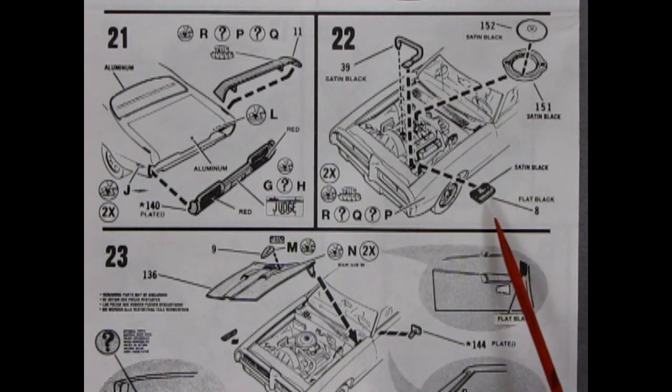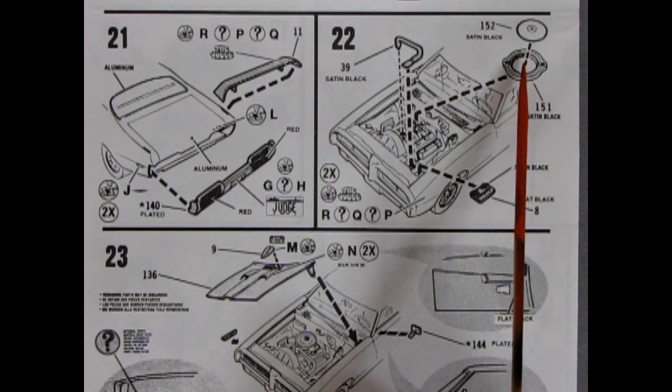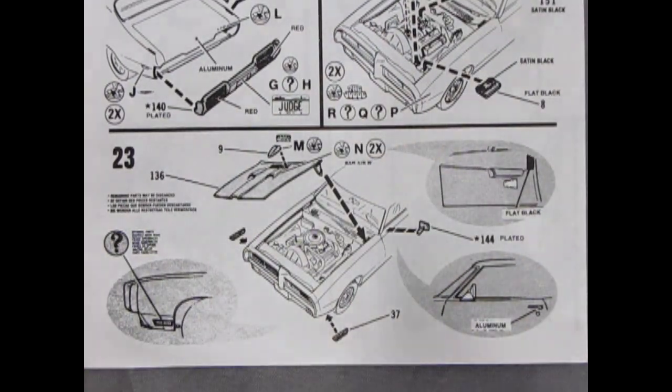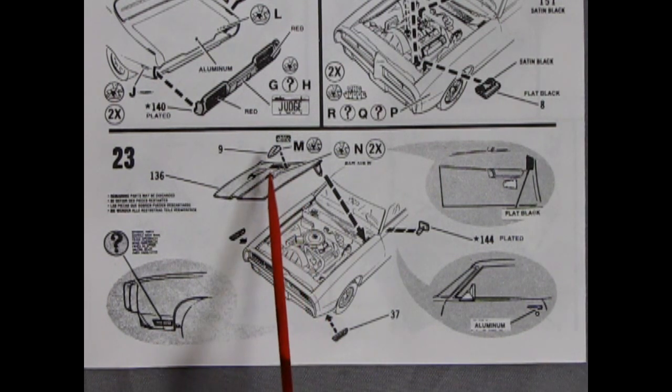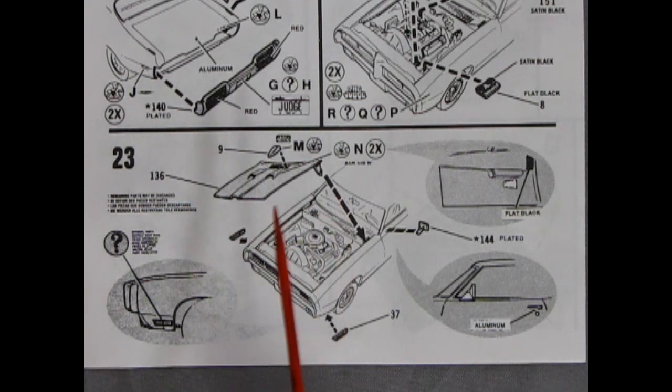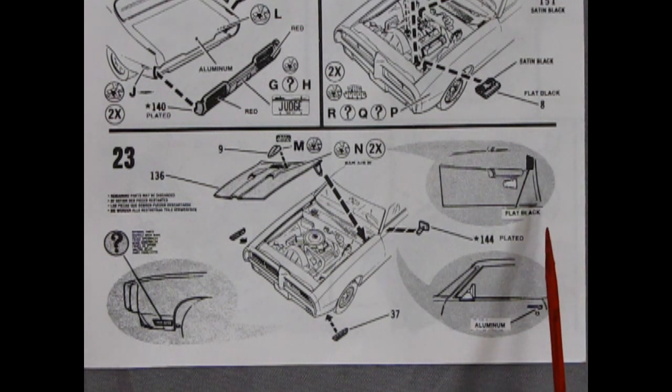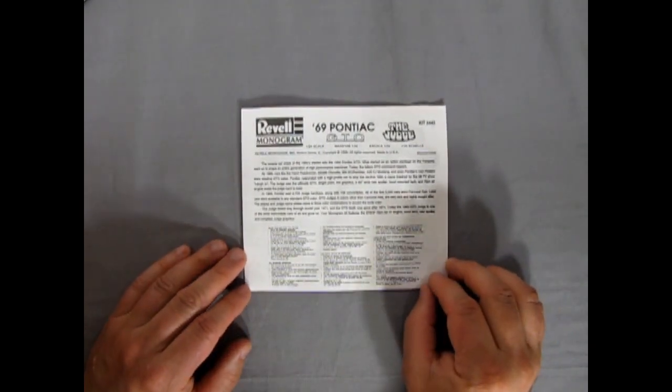Then panels 21 and 22 here are showing our rear spoiler being glued on with our judge decals going on there, as well as the rear bumper which pops onto the back here. And then here we have our air cleaner. This is the ram air type one. There's a battery going on there, and then we have a radiator hose and the top of our ram air air cleaner which glues on there. And then we get into our final panel here which is panel 23 showing the optional side marker light so you can glue on there.